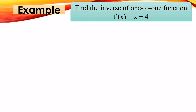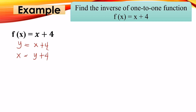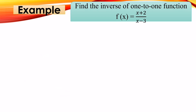Another example: find the inverse of the one-to-one function f(x) = x + 4. Step one: change f(x) into y = x + 4. Step two: interchange — y becomes x = y + 4. Then solve: bring x to one side, so y = x - 4. Change y into the inverse function notation: f⁻¹(x) = x - 4. This is the final answer.